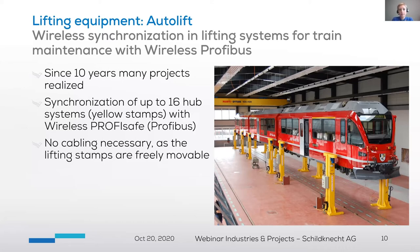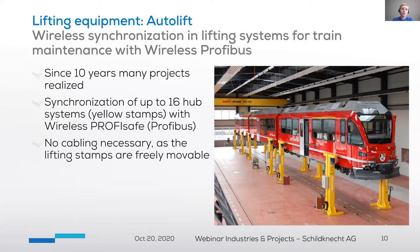Another customer, Autolift, produces lifting equipment for train maintenance. They have specialized lifting equipment — seen here in yellow — to lift a complete train. All of these yellow supports are connected wirelessly and synchronized using profibus and profisafe technology. It's very important that since these supports are freely movable, they are not connected by profibus cables, making it much safer and more convenient when forklifts or people are moving around the train. We have done many of these projects over the past 10 years.